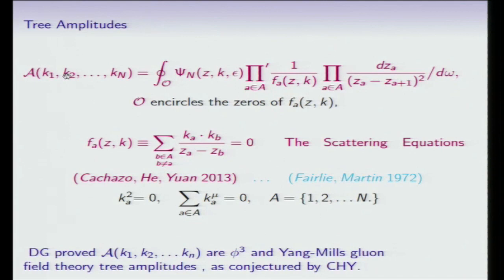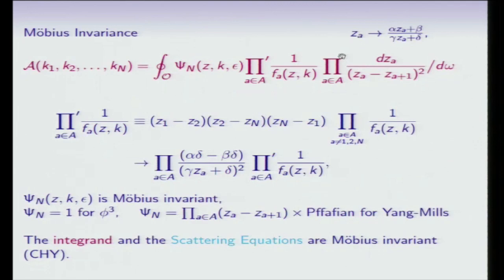So what is responsible for the fact that this tree amplitude is computing graphs of field theory without using Wick diagrams or Feynman graphs must trace back to the Mobius invariance of this integrand. So here's the Mobius transformation. Psi n, if it's 1 for the phi-cubed theory, it's related to a Pfaffian for Yang-Mills theory. Those are modular invariant. This d omega is the modular invariant measure on the Mobius group. dz_A over one factor of this denominator is modular invariant. So this primed product, which is really 1 over f with three of the positions taken away and then replaced by these numerator, transforms under the Mobius transformations in this way, and that cancels against the transformation of the remaining factor here. So this is a Mobius invariant integrand. The integrand is Mobius invariant. The scattering equations are Mobius invariant because the f's transform in this way.